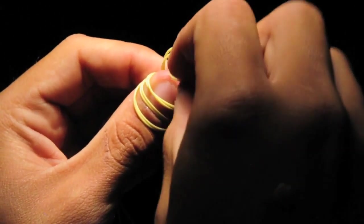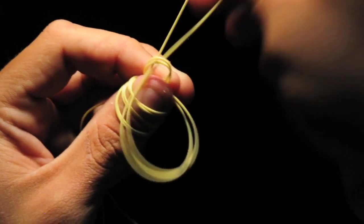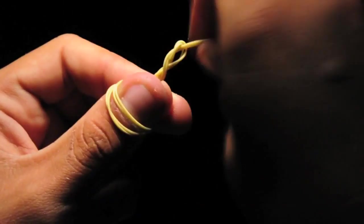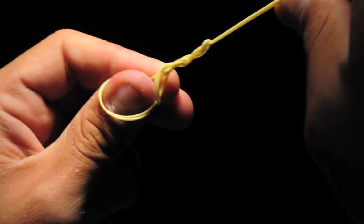Now take your loop and pass it through the other loop. And this is why you wanted to make your wraps one right after the other. This way they pull right off your thumb in line with one another.